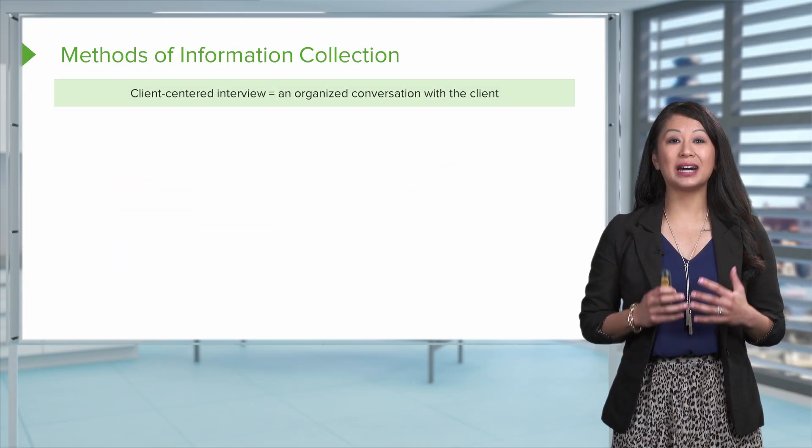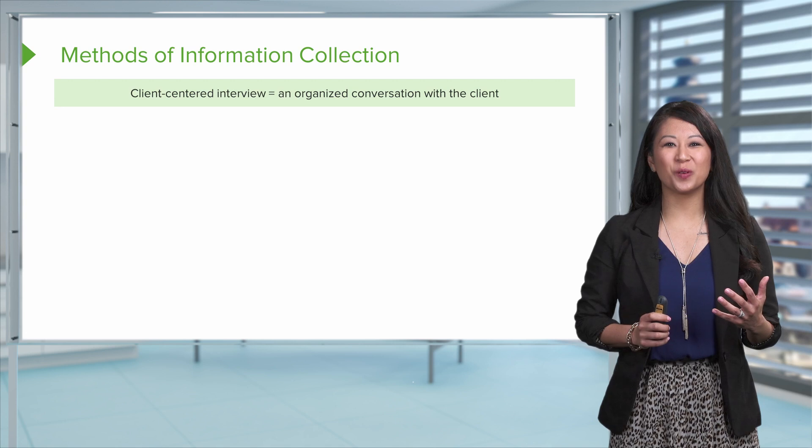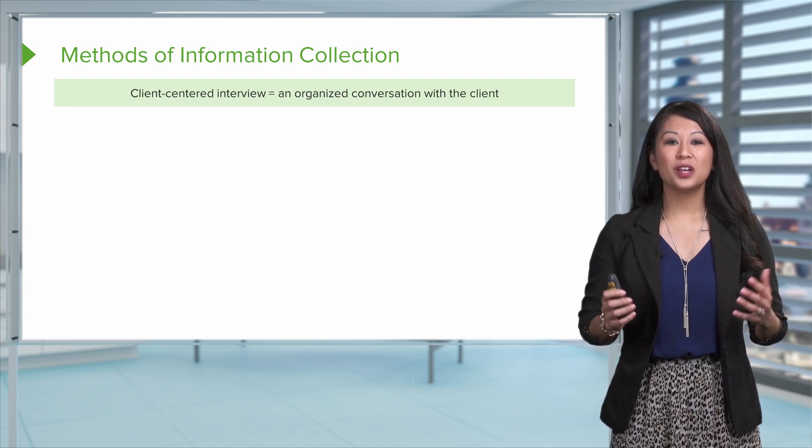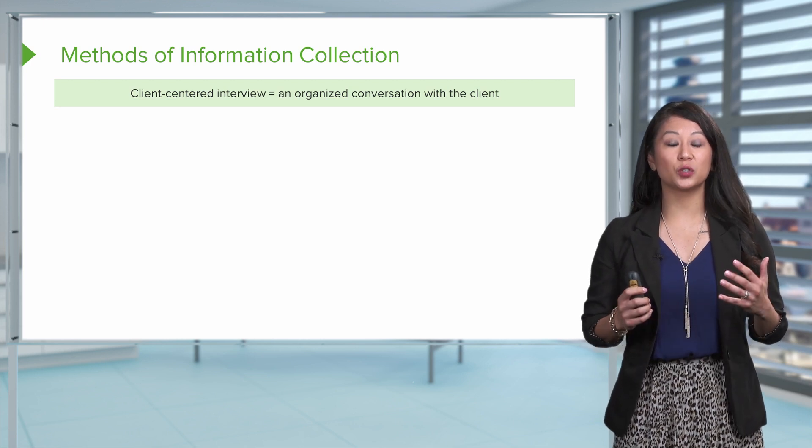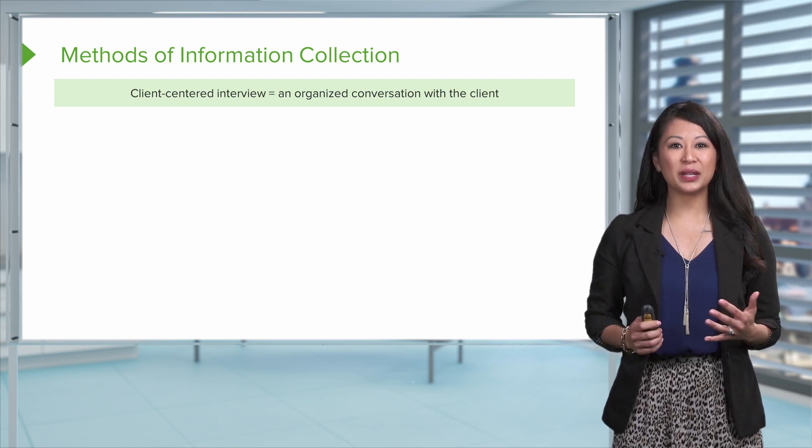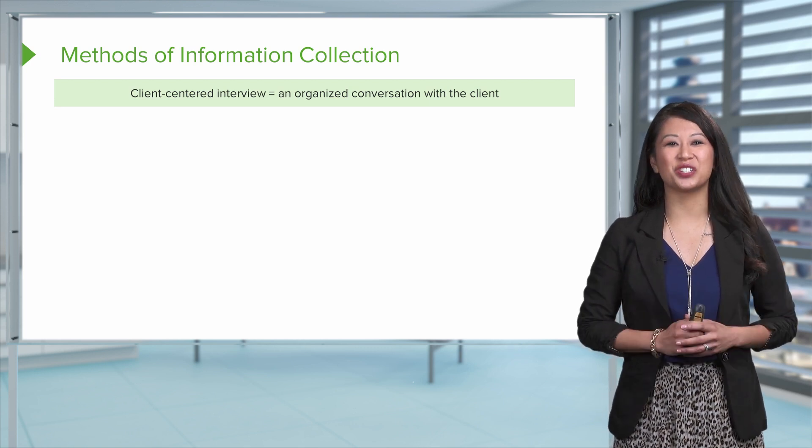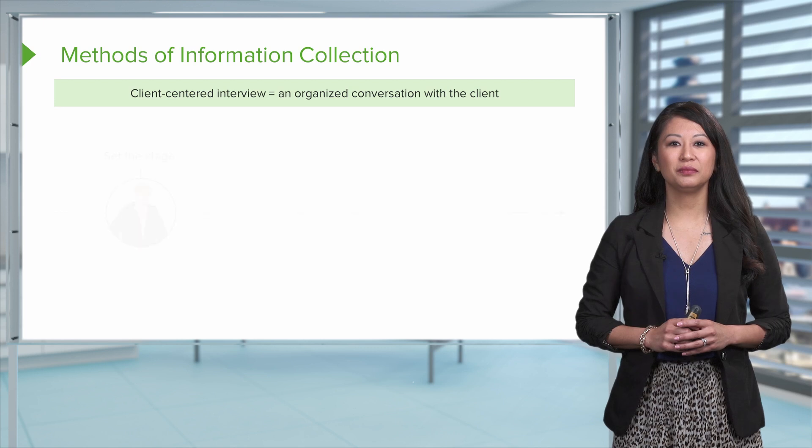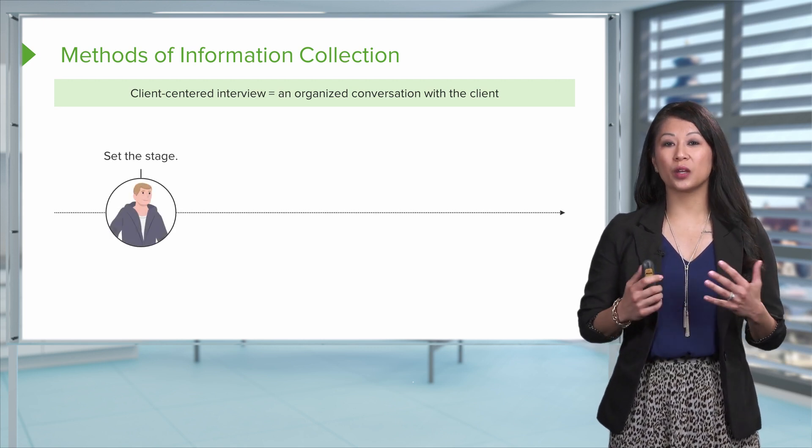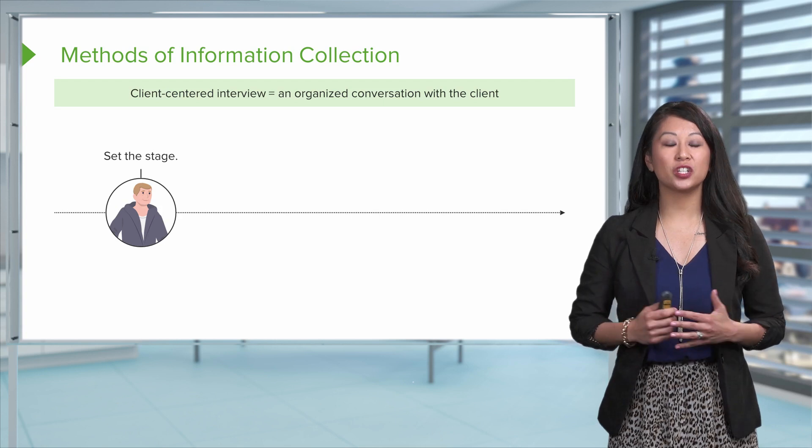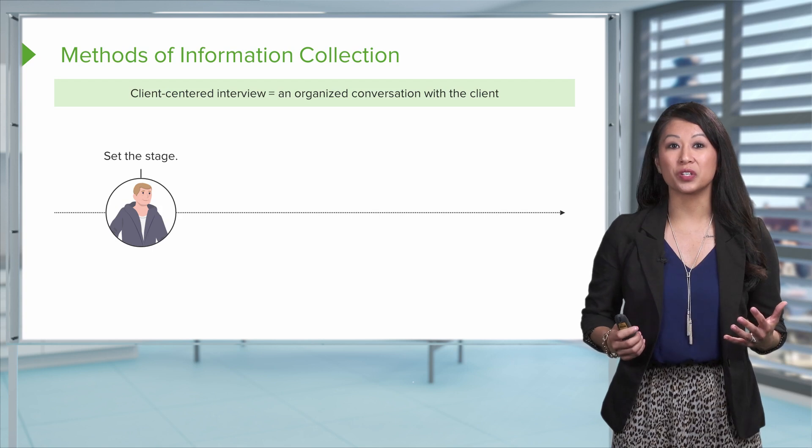Now let's talk about different methods of information collection. And first of all, we're going to start with a client-centered interview. So this is really important because we're going to have an organized conversation with the client. This is typically in the form of a health history of a client, or also known as the admission history assessment. So when we start, we're going to set the stage. We're going to have our information ready to ask our clients. We're going to greet them, let them know who we are and what we're doing.